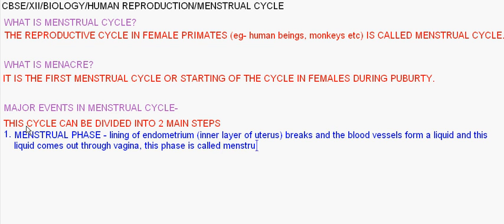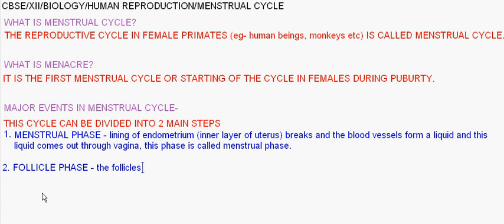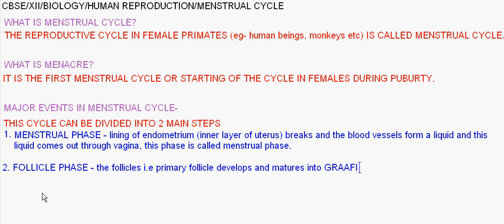The next phase is the follicular phase. What happens during this phase — the primary follicle develops and matures into a Graafian follicle. So the primary follicle gets converted to a Graafian follicle. This phase is further subdivided into two stages.